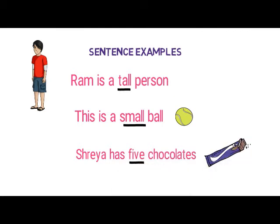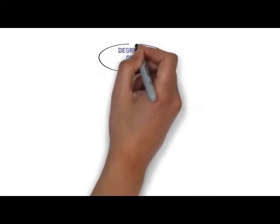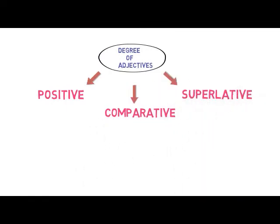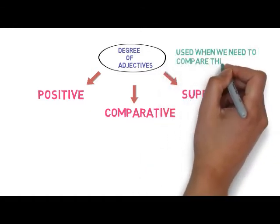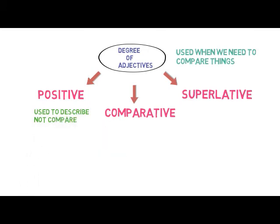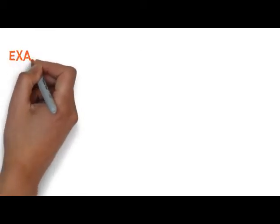I hope you understand the meaning of adjectives and why we use them. Now let's learn about the degrees of adjectives. Adjectives have three degrees of comparison: positive, comparative, and superlative. Why do we need degrees of comparison? They are used when we are comparing things. The positive degree describes without comparing. The comparative degree compares two things. And the superlative degree compares more than two things.